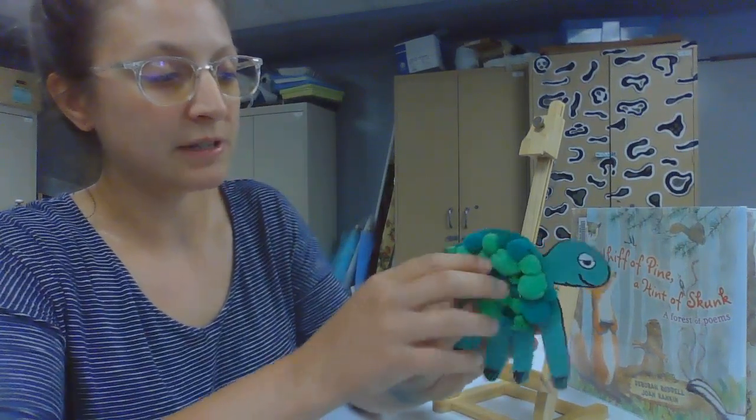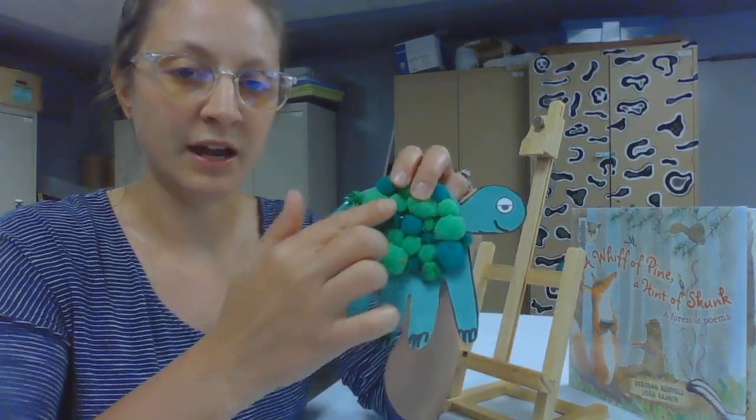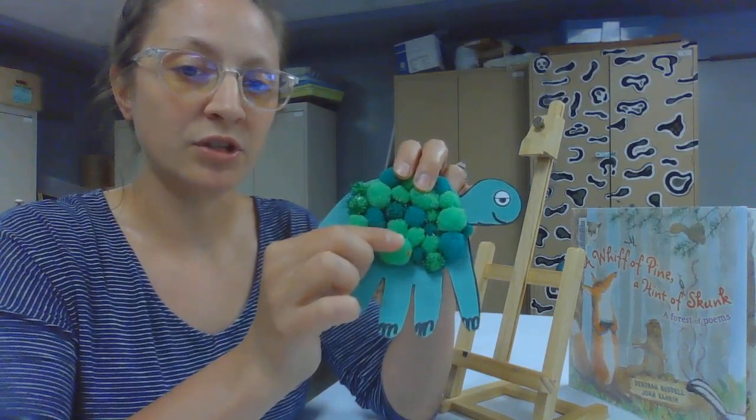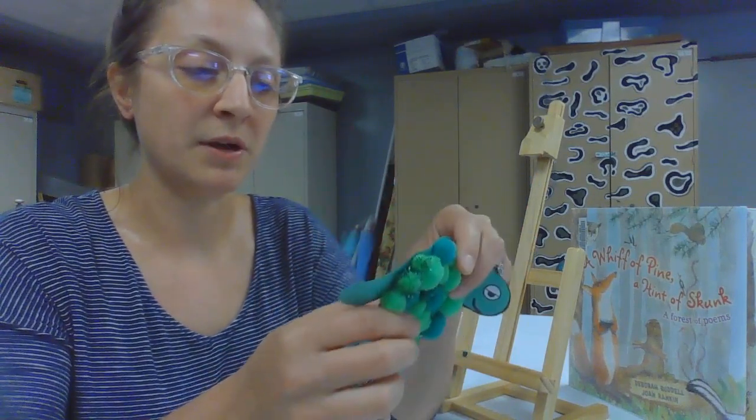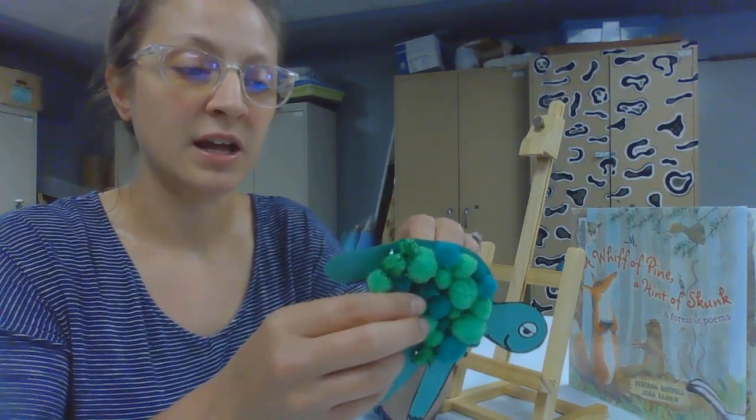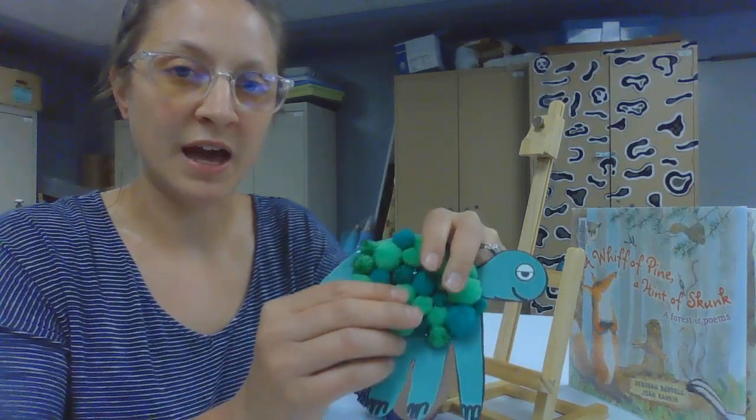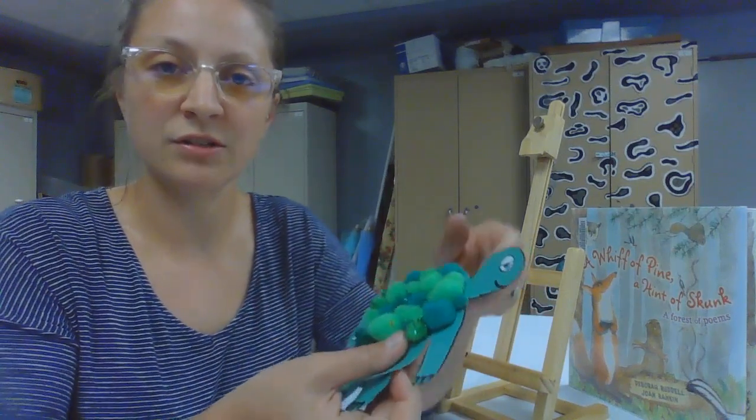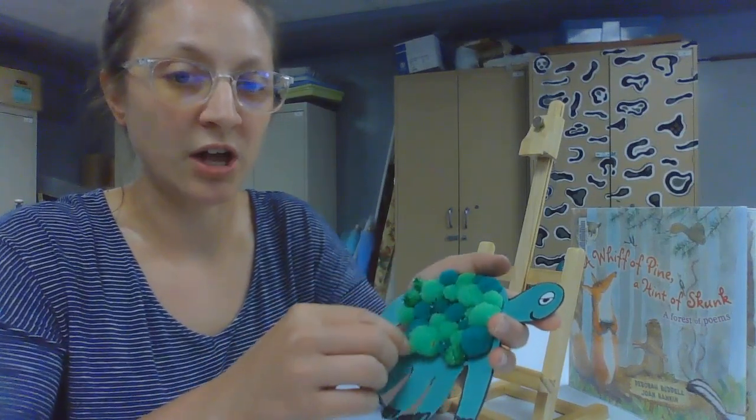You need some pom-poms. These are those fuzzy little pom-poms that you can get at the store. If you don't have those, you can use some cotton balls that you've painted green. If you don't want to get too messy with that, you can just use some stickers, you can use some crayons, and you can just decorate your shell.